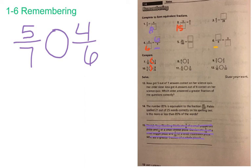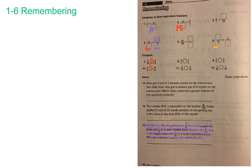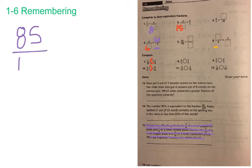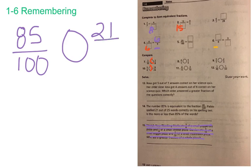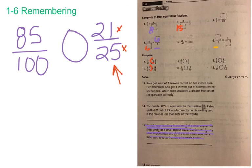Number 14: 85 percent is equivalent to the fraction 85 over 100. Paolo spelled 21 out of 25 words correctly on his spelling test. Is this more or less than 85 percent of the words? This is a comparison fraction — we have 85 over 100, and we're comparing it to 21 over 25. You know that 25 is a factor of 100, so figure out 25 times what gives you 100, then multiply top and bottom by that same number to compare with a common denominator. Don't forget your label. You need to finish problems 3, 5, 6, 8, 9, 11, 12, 13, and 14 on your own. When finished, take a picture, upload your work, and turn it in on Teams.